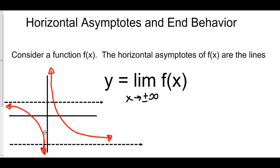I have graphed some function f, and as we go to negative infinity, we can see that our function is approaching this horizontal line. That's called the horizontal asymptote. It approaches but never actually reaches it, which is why we take a limit. To find this horizontal asymptote, we would take the limit as x goes to negative infinity.